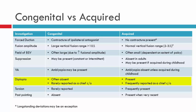In terms of diplopia, it will usually be absent or intermittent in congenital or longstanding cases, and is not often the primary complaint. Compared to acquired or recent deviations, these are usually patients who present with a complaint of diplopia. In terms of torsion — and here we're talking about subjective torsion or the appreciation of subjective torsion — this is rarely reported in patients with congenital deviations. As compared to acquired deviations, patients may indicate that they notice a tilted image.